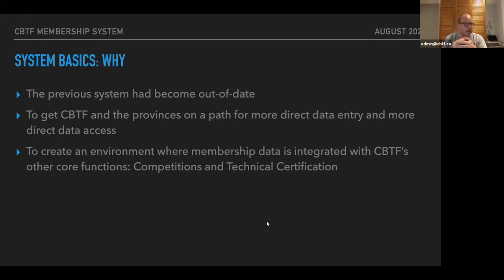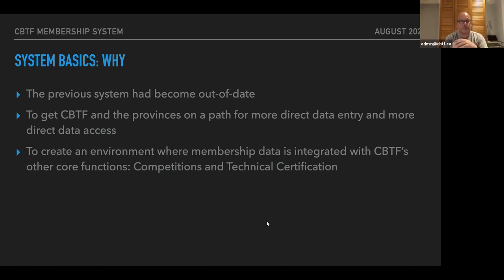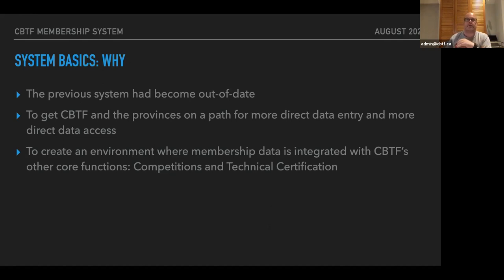We wanted to get CBTF and the provinces on a path so there was more direct data entry and more direct data access. More direct data entry means the membership data gets entered closer to the clubs — more by the people who are actually working with the members. More direct data access means this membership data can be integrated with our competition system. Things like member numbers, dates of birth, and athlete levels in events can be pulled directly from the new membership system into the competition system, so the membership data is more integrated with CBTF's other core functions.